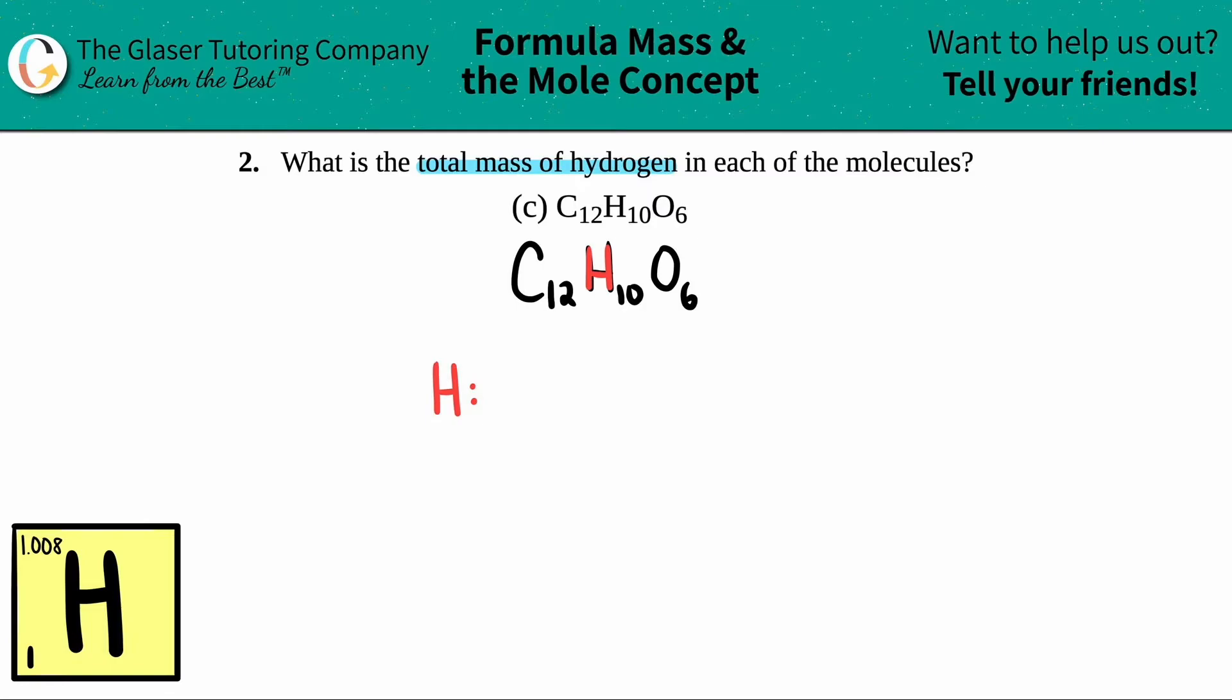Okay. The next thing is we got to find out how many of the hydrogen do I have? Now I see that we have numbers next to every element. These small numbers, aka subscripts, will tell you how many of each element you have. So you have how many hydrogens, guys? Ah, you got 10 hydrogens. Good job. You got 10 hydrogens, 10 total hydrogens in this compound.